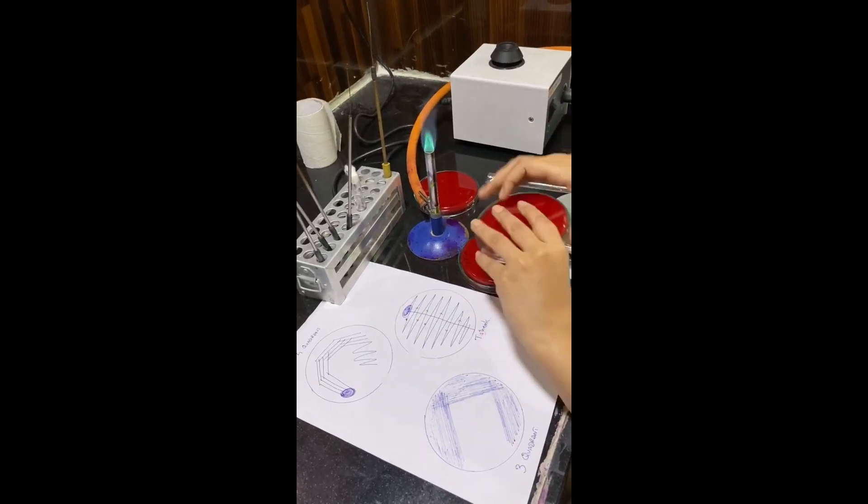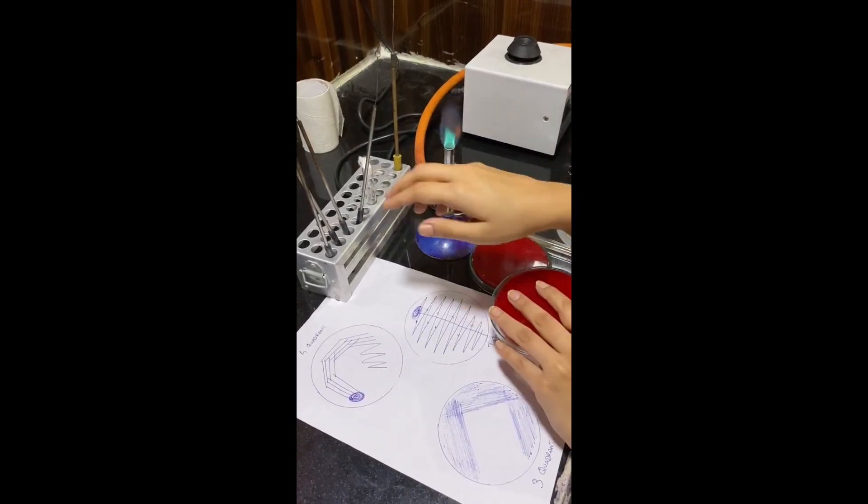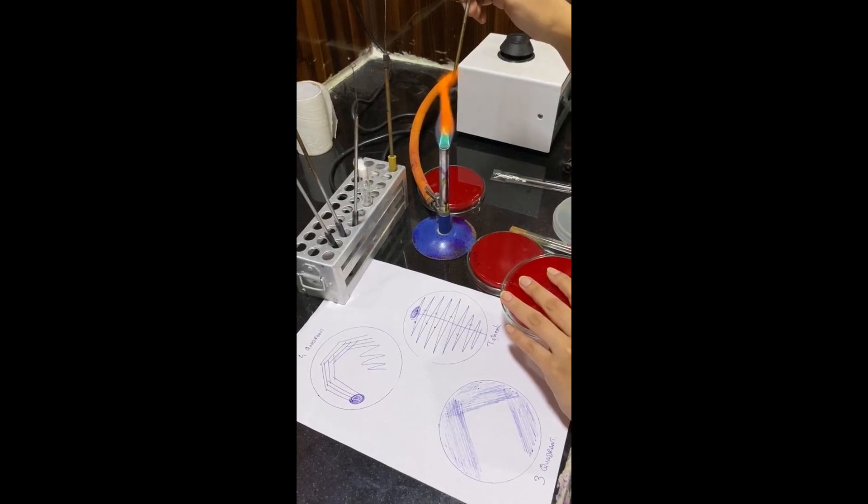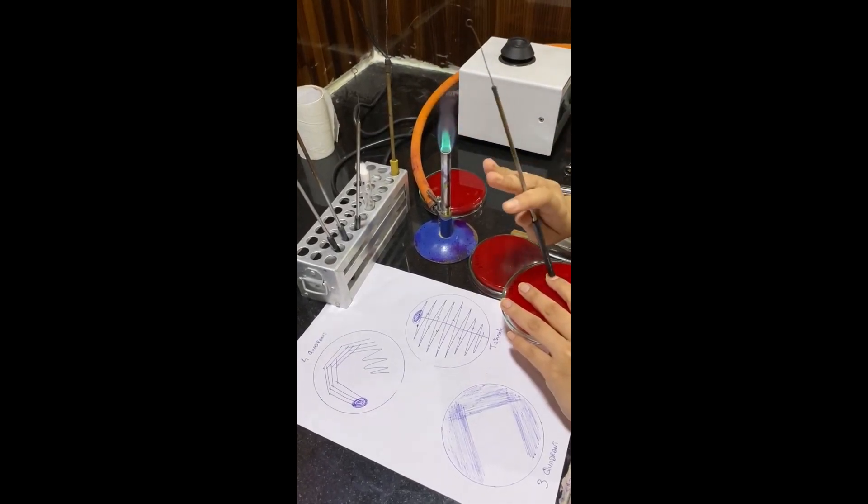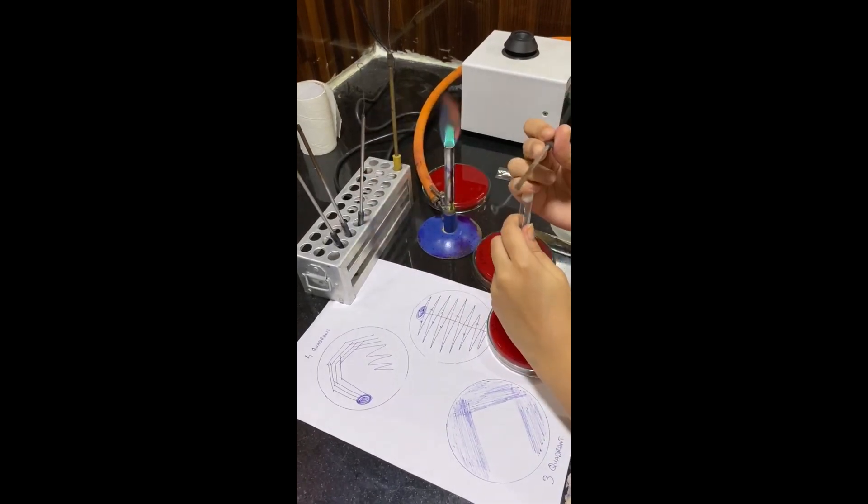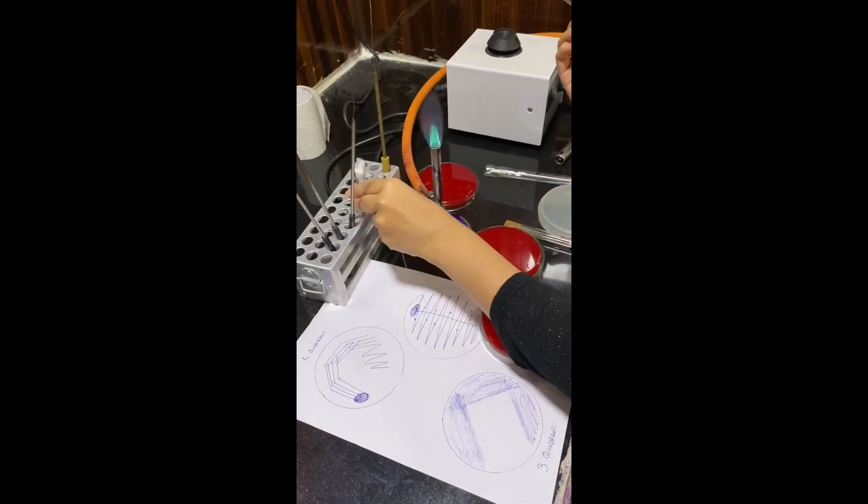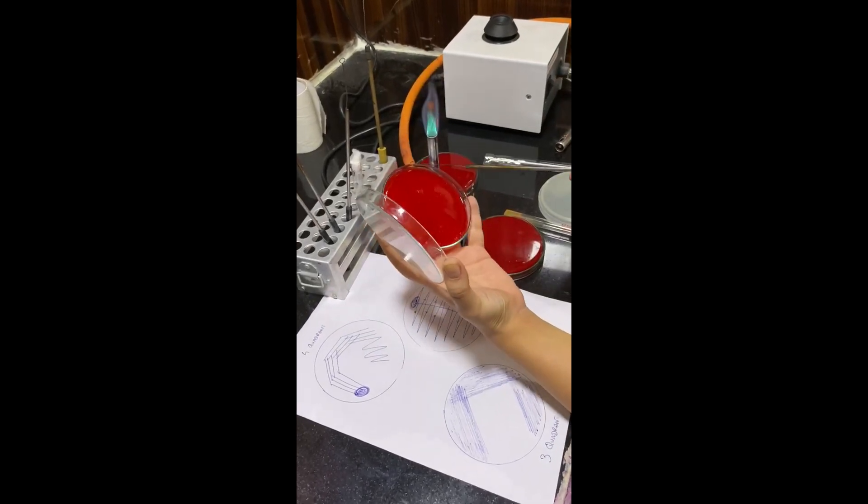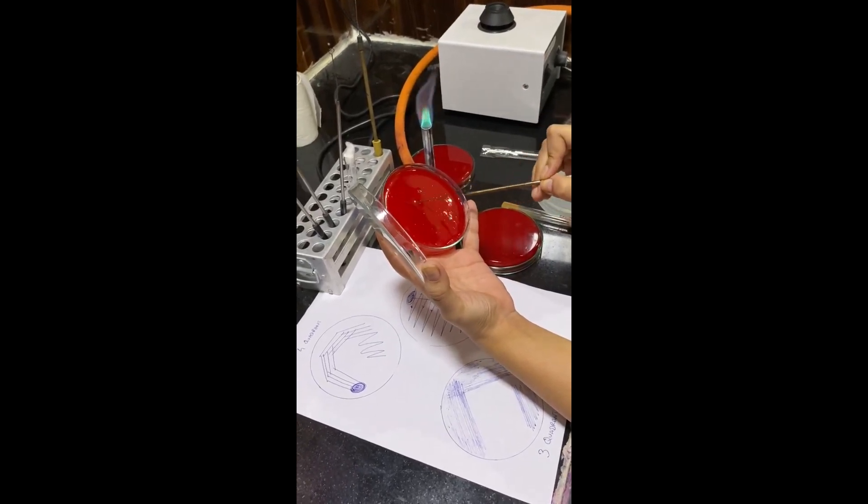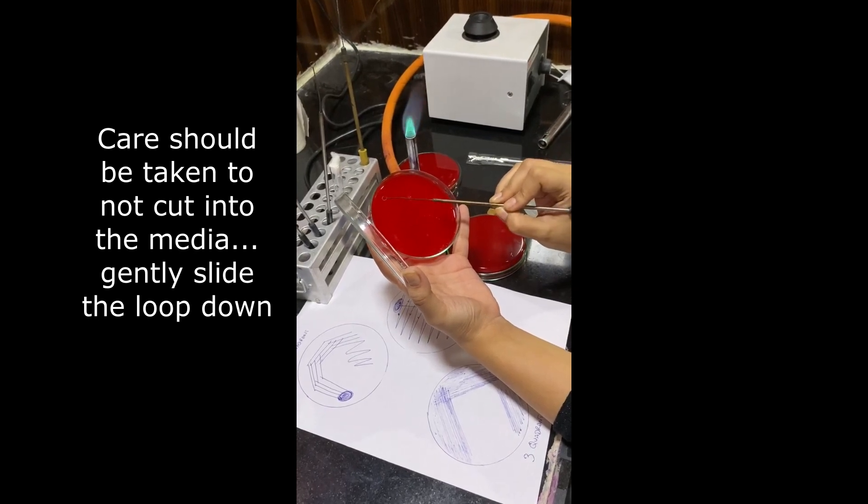Let's go ahead with the T streak method. The T streak method is done for semi-quantitative methods. Example: urine cultures. After sterilizing your loop, wait for at least 30 seconds. Now for this semi-quantitative T streak method, at the top of the plate you need to draw a well. Draw a straight line and draw perpendicular lines to the first initial line drawn from the well. In this manner.